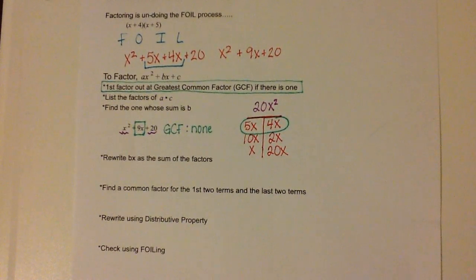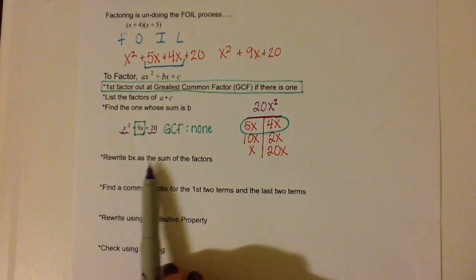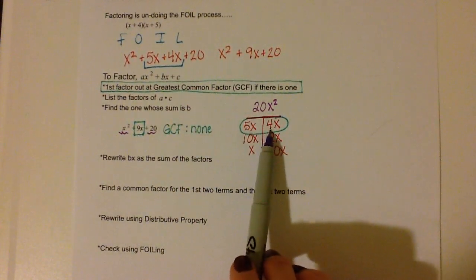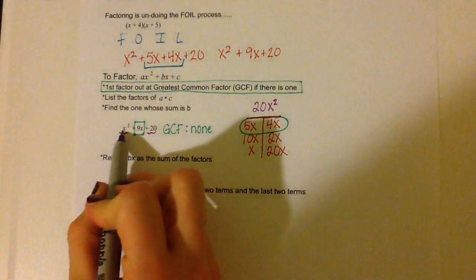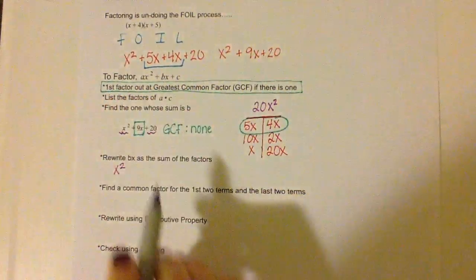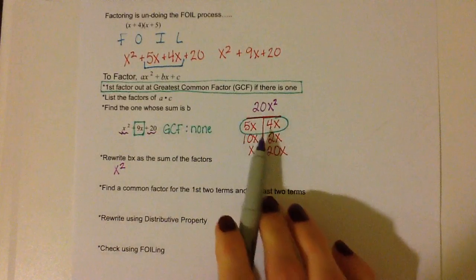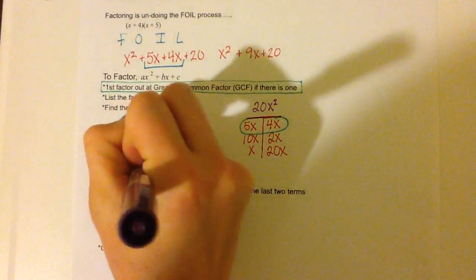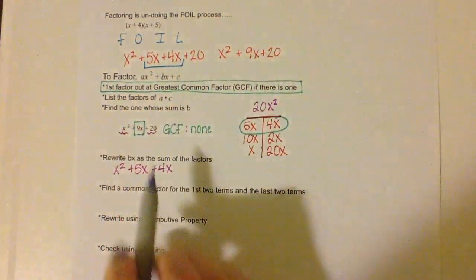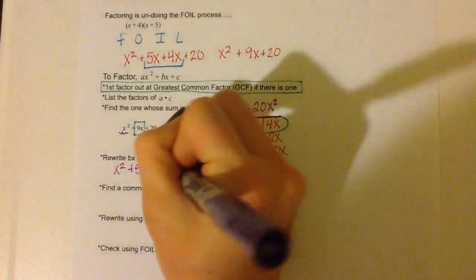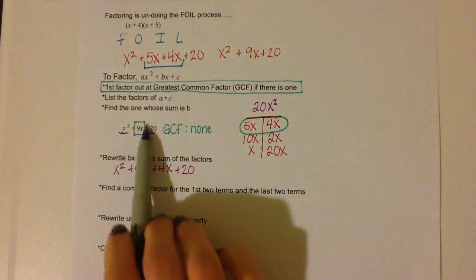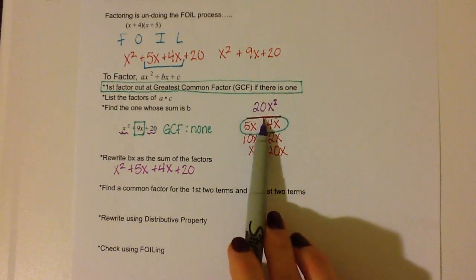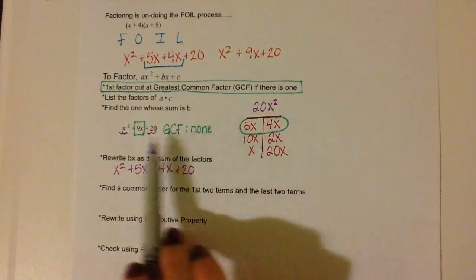So it says we are going to rewrite bx as the sum of the factors, meaning we are going to rewrite this using the sum. So we are going to rewrite it as x squared, and instead of 9x, we are going to have plus 5x plus 4x, and then we still have plus 20. We found two factors that multiplied together equal a times c, and added together equal b.